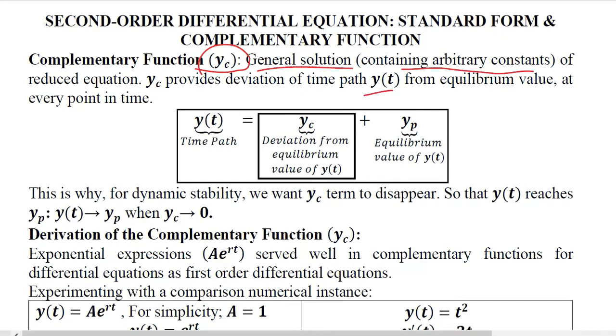So Yt is used to represent the time path and Yc provides the deviation from the time path from the equilibrium value. This is the time path, this is the equilibrium value, and this is the deviation from the equilibrium.